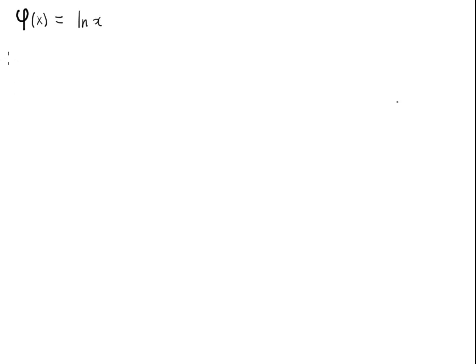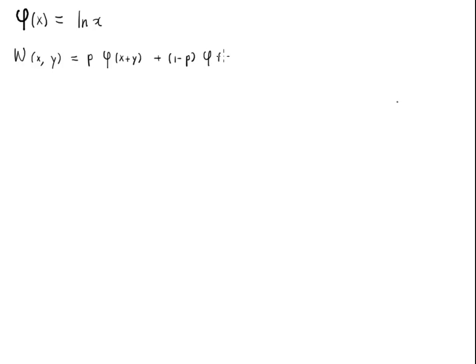We start from the expected value, so we're going to use W. W is the expected utility if we bet the amount y. So W depends on x, the amount we have, and y, the amount we bet. Because the win probability is p, we have p times φ(x + y).